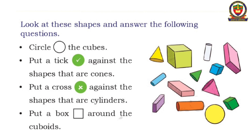Look at these shapes and answer the following questions. Circle the cubes. Put a tick against the shapes that are cones. Put a cross against the shapes that are cylinders. Put a box around the cuboids.